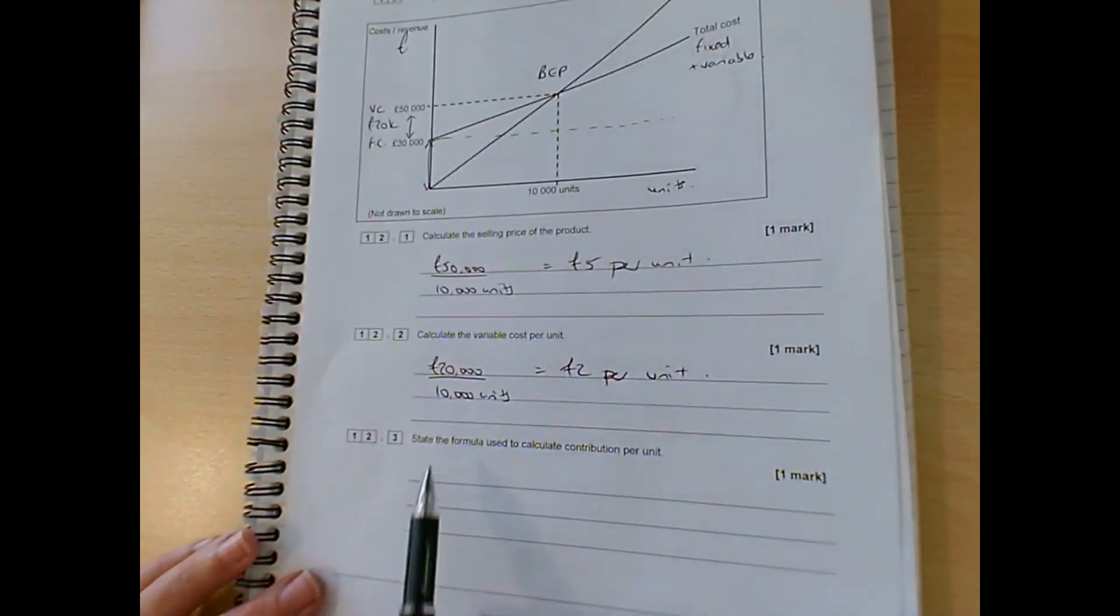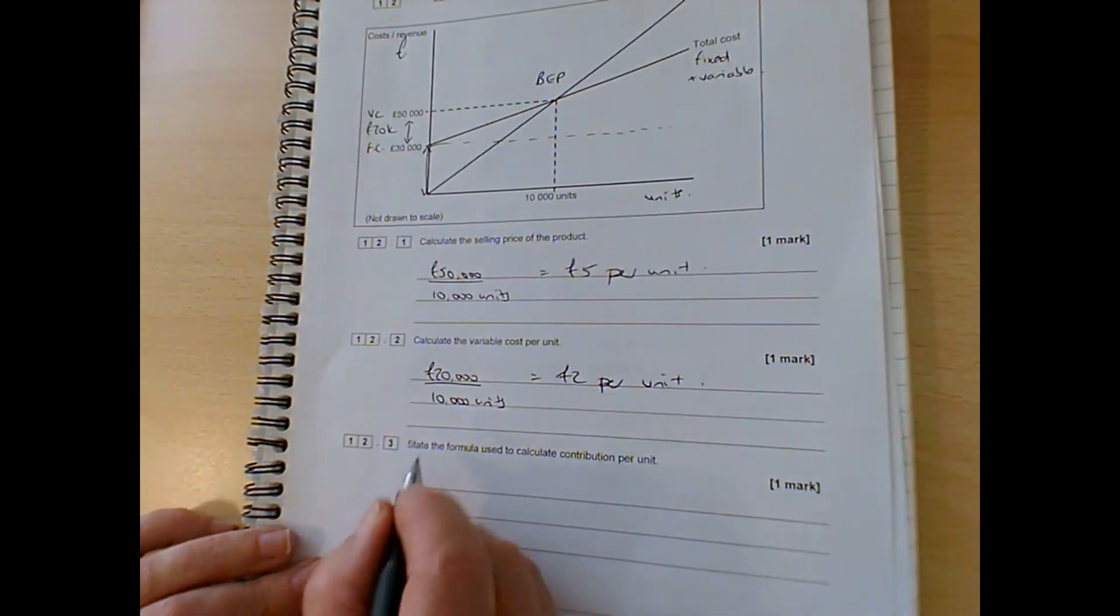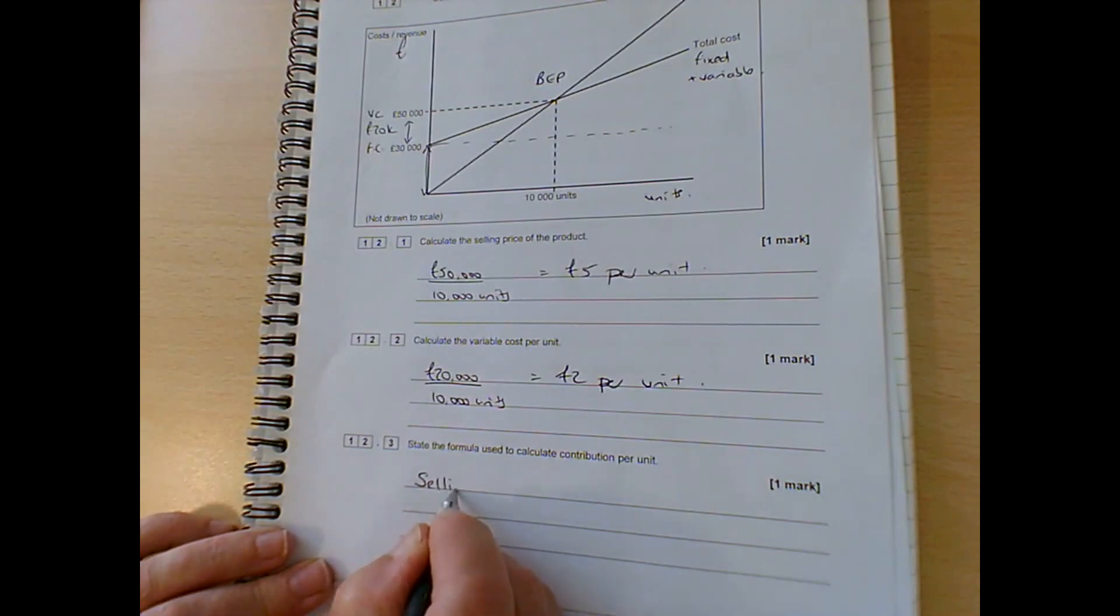So now we can state the formula used to calculate contribution per unit. So that's the selling price minus the variable costs.